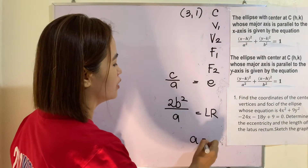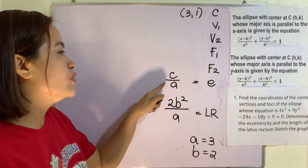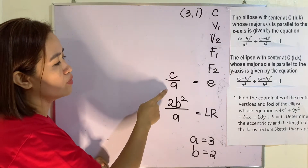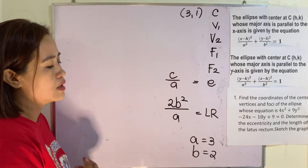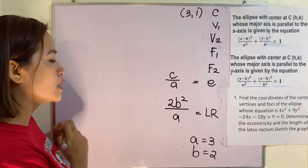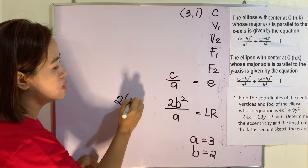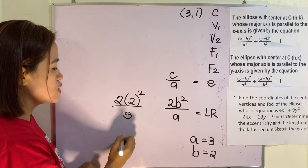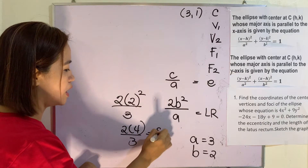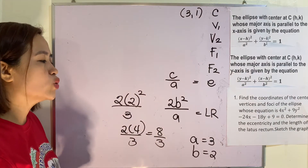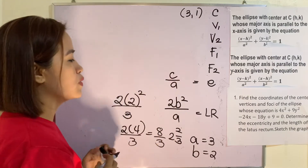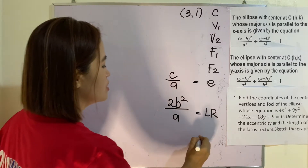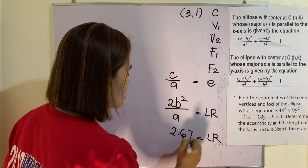We have the formula for the length of the latus rectum and eccentricity. We cannot solve the eccentricity yet since we do not have c yet. But we can already solve the latus rectum. This is 2 times b squared over a, which is 2 times 4 over 3. This gives 8 over 3, or 2 and 2 thirds, approximately 2.67. So the length of the latus rectum is 2.67.